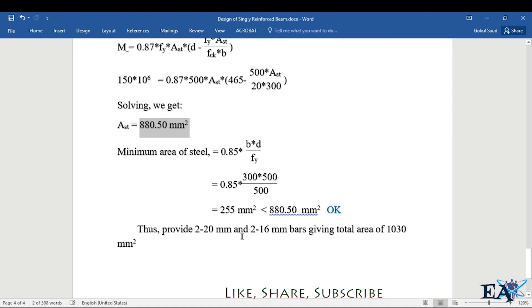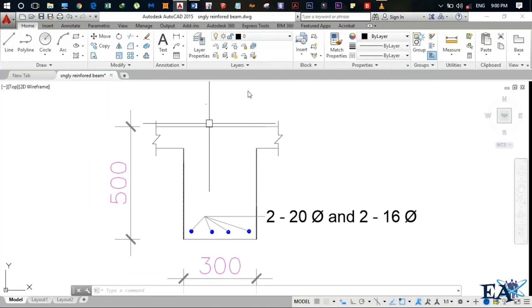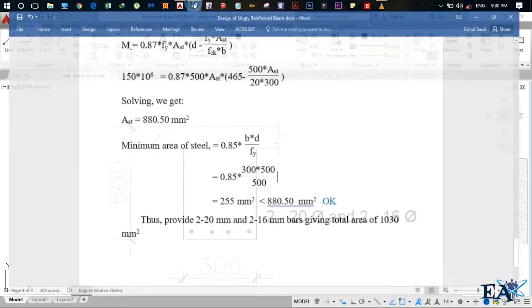Thus we provide 2-20mm and 2-16mm bars to give total area of 1030 mm². This is the final section of the beam. Our depth is 500 mm and breadth is 300 mm. So 2-20mm diameter bars are at the edge and 2-16mm diameter bars are inside. This is how you calculate the value.